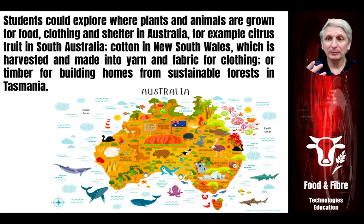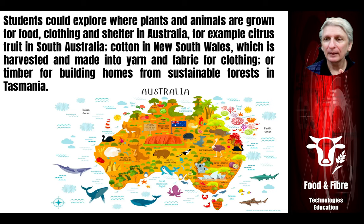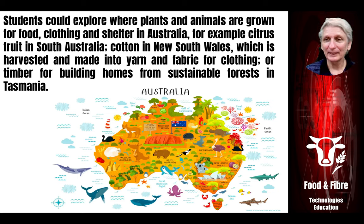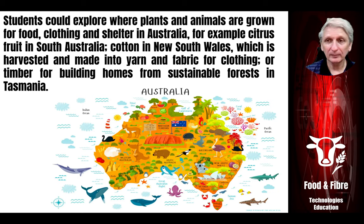Students could look at how different plants and animals are better suited for different environments. In our tropical north we grow things such as bananas and yams and tropical plants and animals, while in the south we have different animals and plants, and in the desert areas again different animals and plants to our coastal areas. The idea is that it's not uniform where we gather our animals and plants from — there are certain areas better suited for them than others, and students can explore why that's the case.